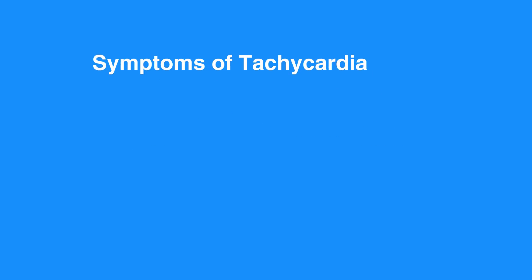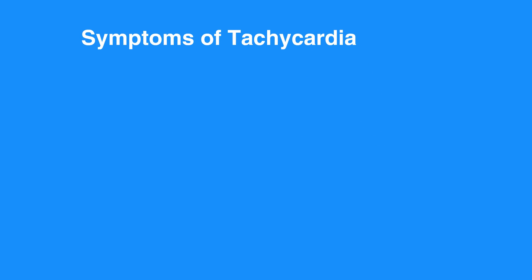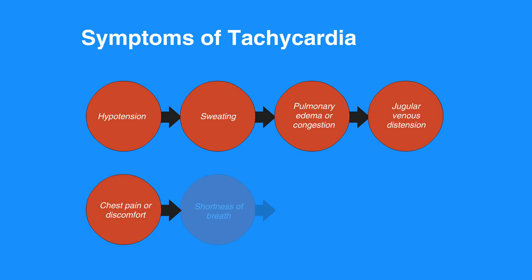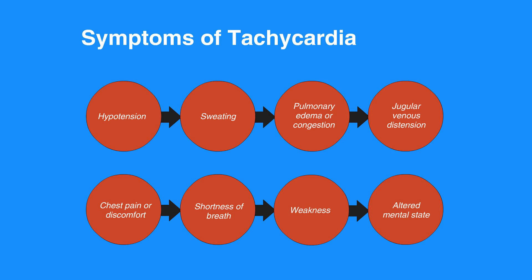Symptoms of tachycardia include hypotension, sweating, pulmonary edema or congestion, jugular venous distension, chest pain or discomfort, shortness of breath, weakness, dizziness or lightheadedness, and altered mental state.